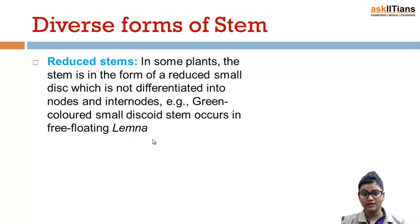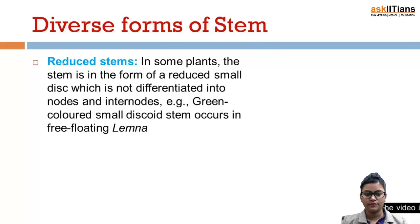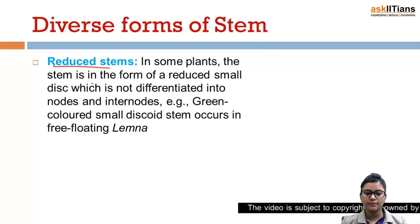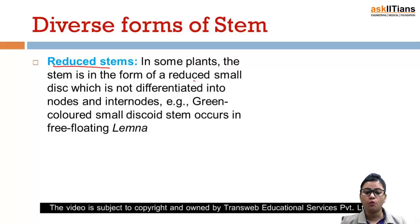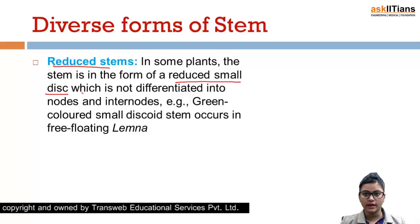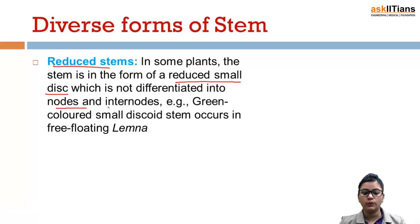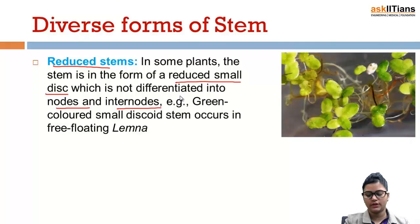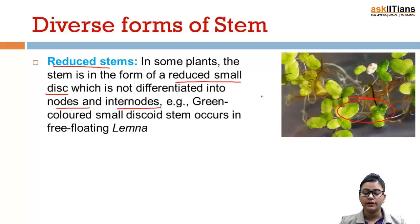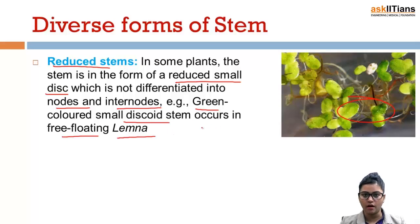Now we will discuss the various diverse forms of stems. In some plants, the stem is in the form of a reduced small disc, which is not differentiated into nodes and internodes. As you can see in the diagram, there is no node and no internode — these are reduced small disc stems.